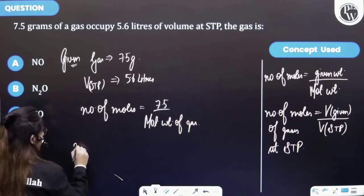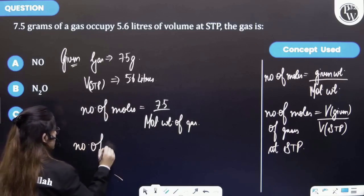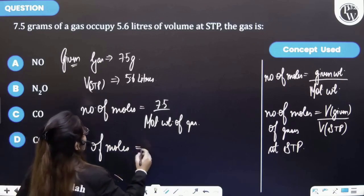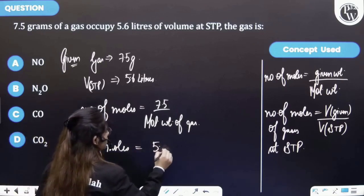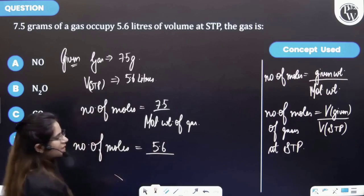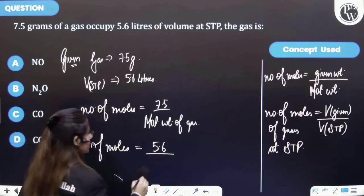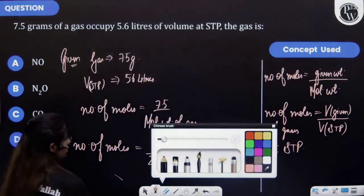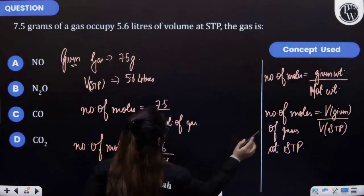Also we know that the number of moles at STP for a gas is equal to volume that is given to you, that is 5.6 liters, divided by the volume at STP which is 22.4 liters. Right?